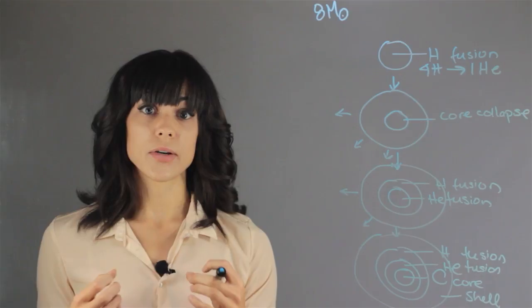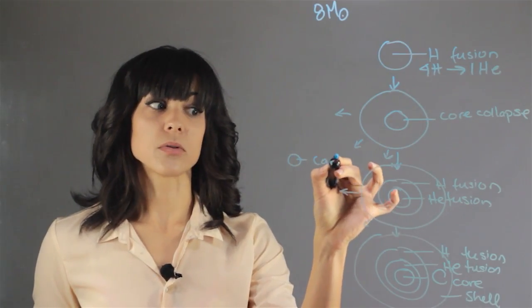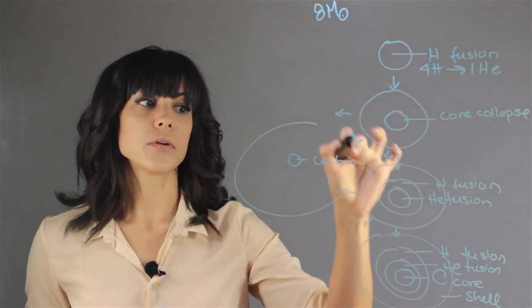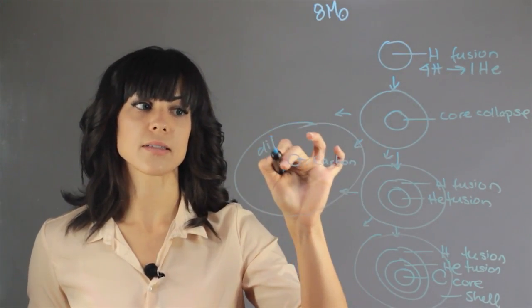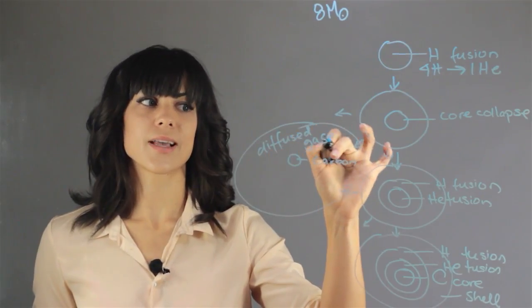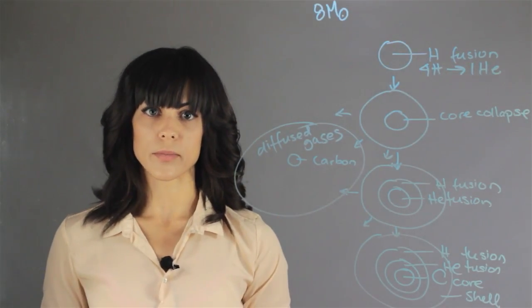A planetary nebula is when you end up with a carbon core exposed with nothing on top of it and a giant cloud of diffused gases that is ionized and looks like it's glowing. This is how a planetary nebula is formed.